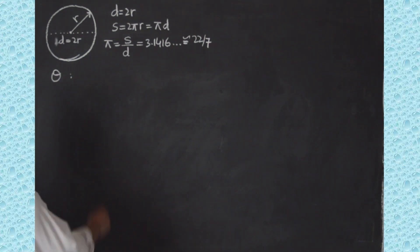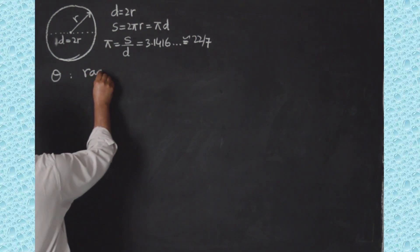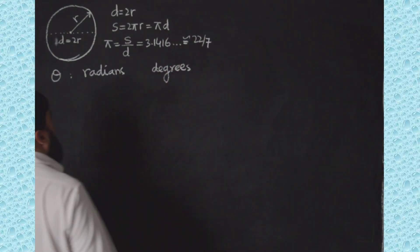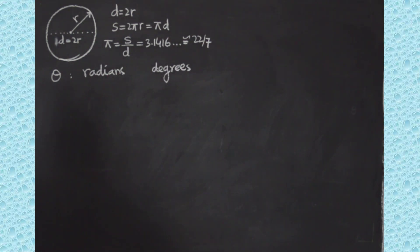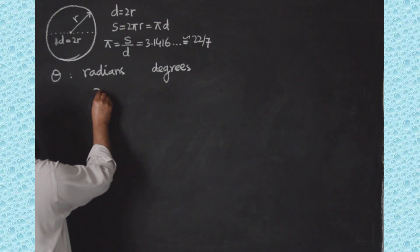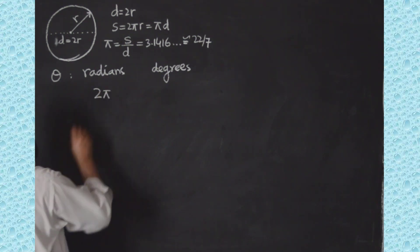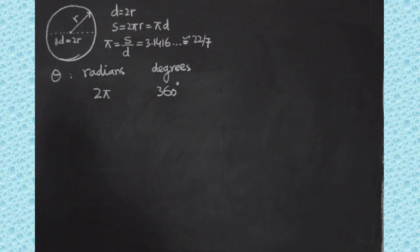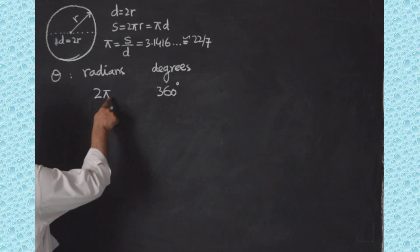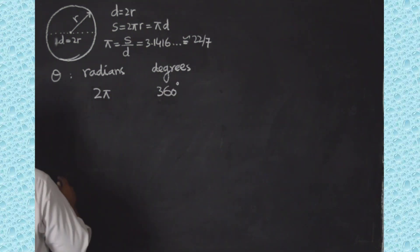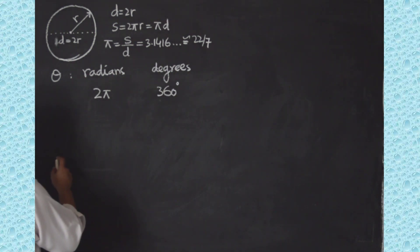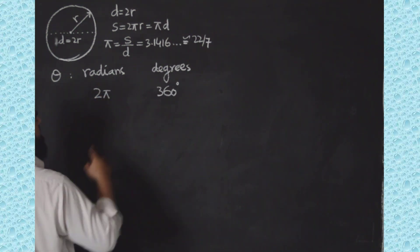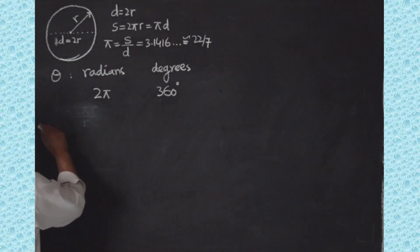Now the angular displacement — we will have to measure this, and it can be measured in radians as well as degrees. Radians and degrees are two different measurements. A circle is completed by going 2π radians, and in degrees that is 360 degrees. So from here I can write that 2π radians is equal to 360 degrees.